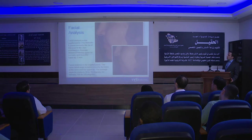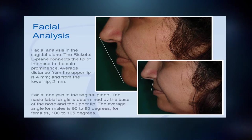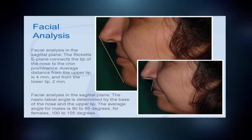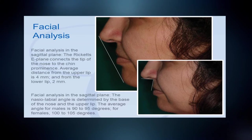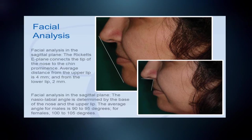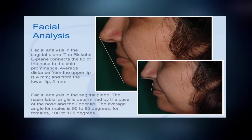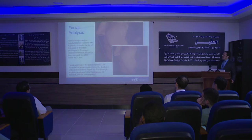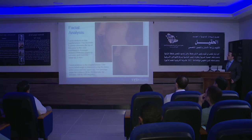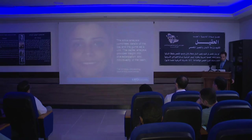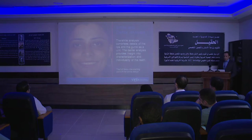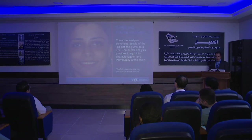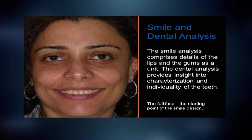In the sagittal plane, the Ricketts E-plane, which connects the tip of the nose to the chin prominence, should be four millimeters away from the upper lip and two millimeters away from the lower lip. The nasal-labial angle should be 90 to 95 degrees in males and 100 to 105 degrees in females. For the smile and dental analysis, we look at the gum and the lips together as one unit.